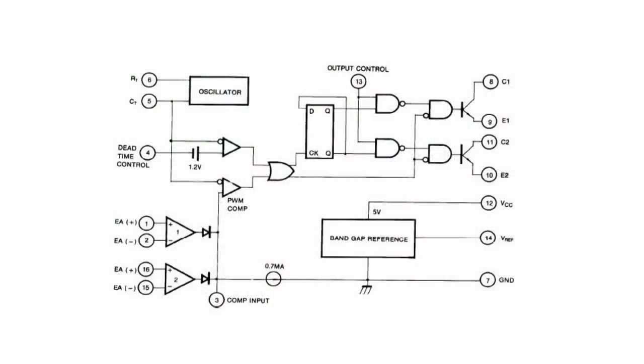TL494 microchip is a PWM controller used in power supply units. The controller includes an error amplifier, comparer, control trigger, regulator, output stage control circuit, and built-in adjustable generator.